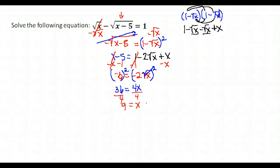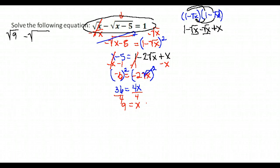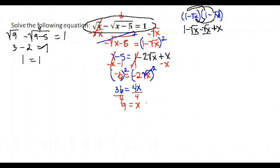Before I circle that as an answer, I'm going to check to make sure it works in my original problem. So I'm going to replace all the x's with 9's and see if it works. So I have the square root of 9 minus the square root of 9 minus 5. Does that equal 1? The square root of 9 is 3, minus the square root of 4 — since 9 minus 5 is 4 — which is 2. 3 minus 2 is 1, so yes, 1 does equal 1. x equals 9 is a valid answer.